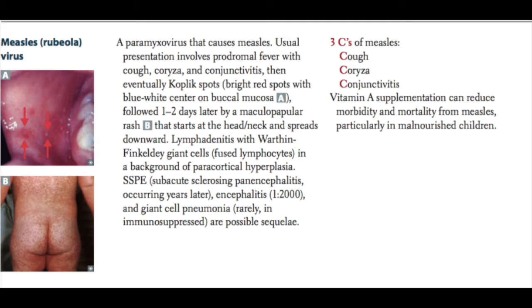Rubeola virus, or measles virus, is another paramyxovirus. It's classically associated with Koplik spots on exam — red spots with blue-white centers seen on the buccal mucosa. It can cause SSPE, or subacute sclerosing panencephalitis, years later. It can cause acute encephalitis, seen in about 1 in 2,000 infections, and giant cell pneumonia, seen rarely and mostly in immunosuppressed patients. The rash spreads from head to toe. Remember the three C's of measles: cough, coryza, and conjunctivitis — and add a K for Koplik spots.